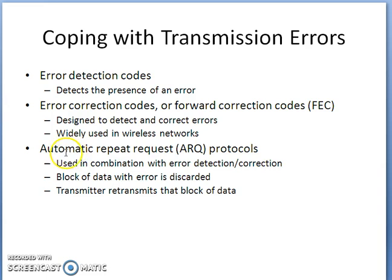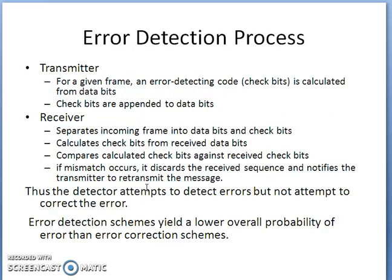There is one more type of protocol used in conjunction with error detection or correction capability, called Automatic Repeat Request, or ARQ, protocols. In ARQ protocols, a block of data with an error is discarded and the transmitter has to retransmit that block. The receiver sends information to the transmitter about whether the block of data was correctly received or not.